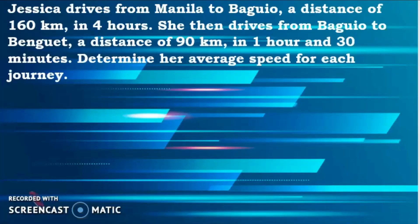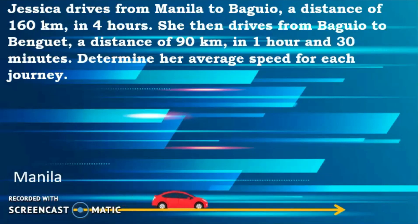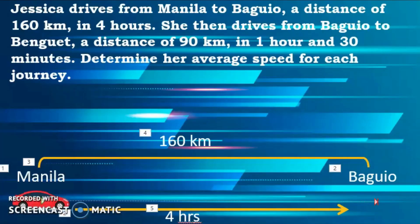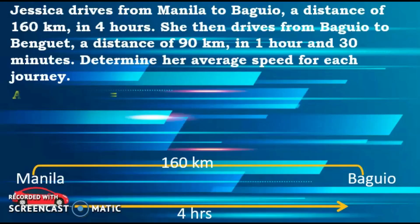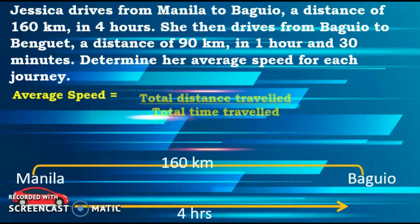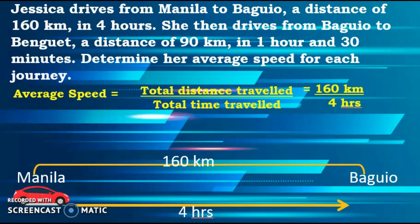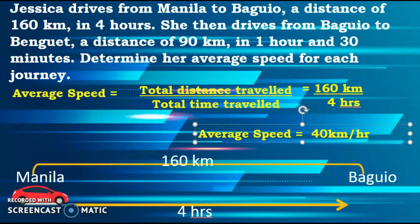So let's try to answer these problems. Jessica drives from Manila to Baguio at a distance of 160 kilometers in 4 hours. Average speed is equals to the total distance traveled over the total time traveled. Total distance traveled is 160 kilometers, total time traveled is 4 hours. So we're going to divide 160 kilometers by 4 hours. Therefore, 160 divided by 4 — the average speed is 40 kilometers per hour.